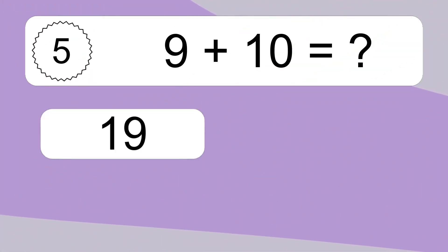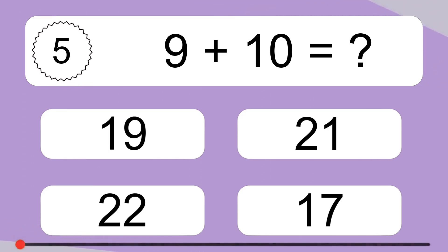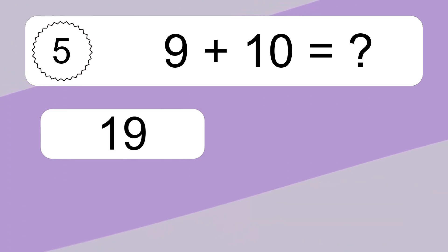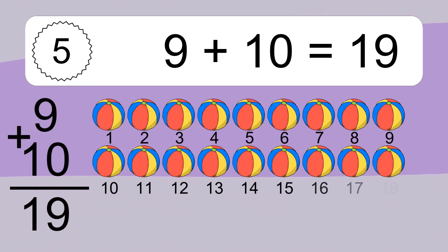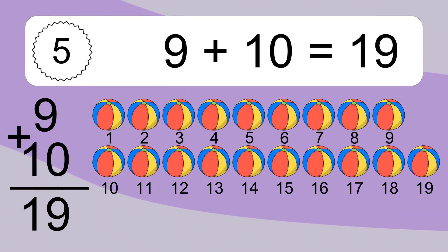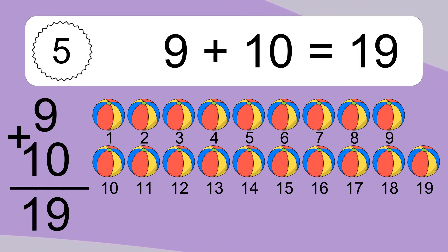9 plus 10 equals what? Let's count it: 1, 2, 3, 4, 5, 6, 7, 8, 9, 10, 11, 12, 13, 14, 15, 16, 17, 18, 19.